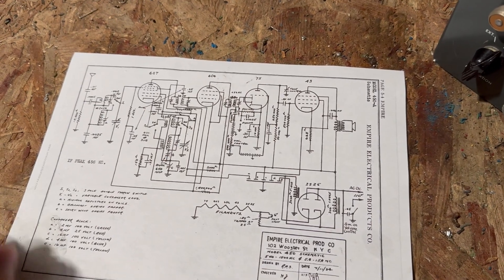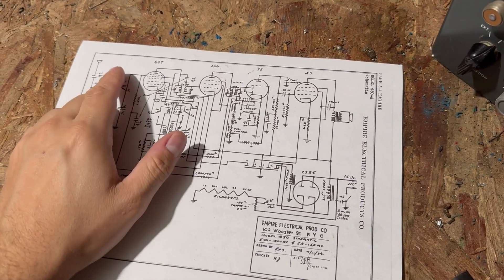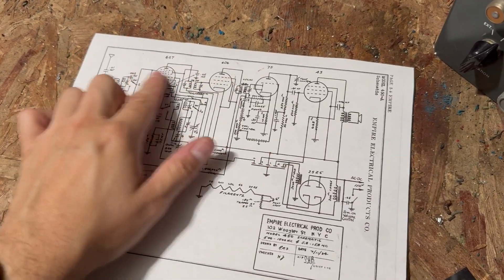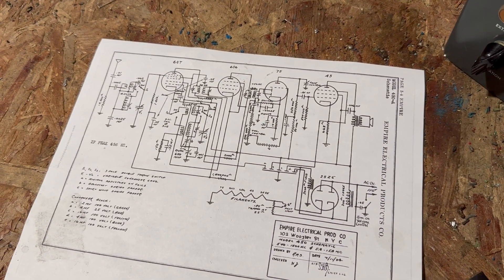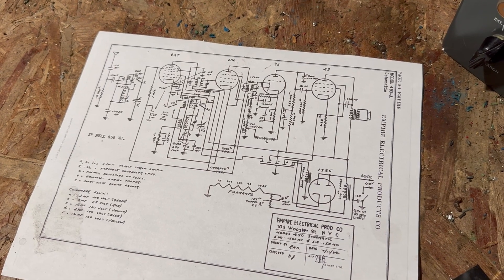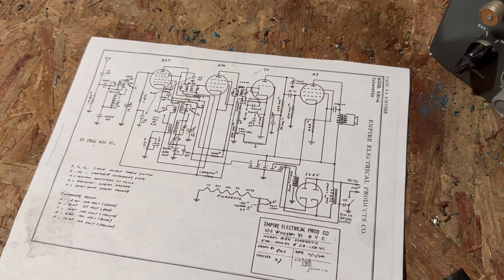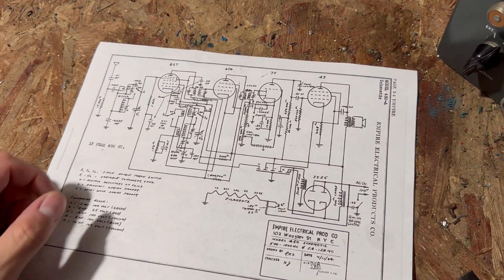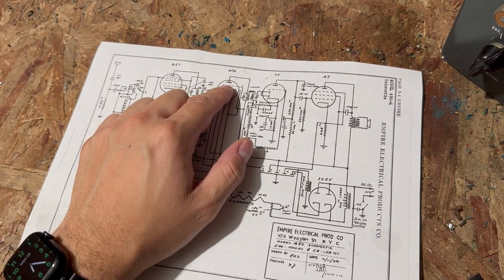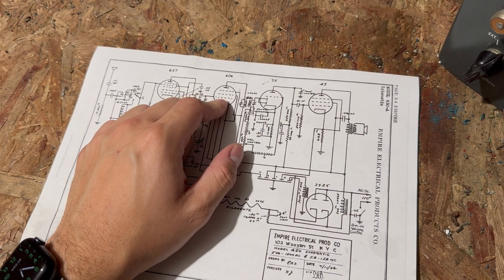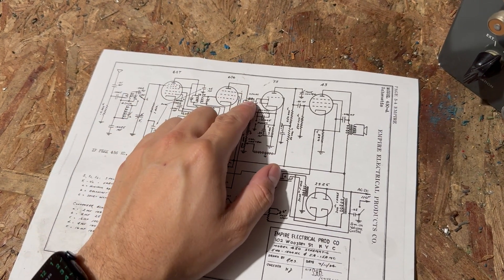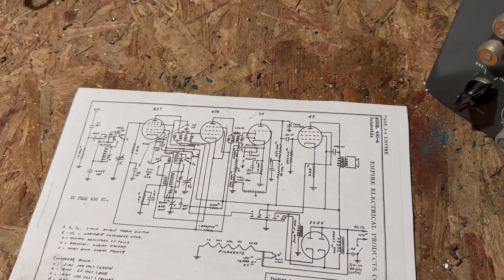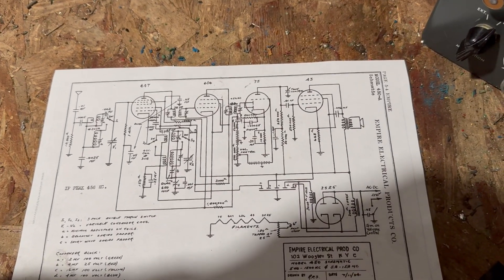You can do it anywhere between here and here, and what that does is allows you to troubleshoot what's not working. Maybe the oscillator is working but you're not getting any reception. Well, maybe this tube is bad. If this tube is not working, you'd hear the signal here but you wouldn't hear it here. And so on, so it's a very useful troubleshooting tool.